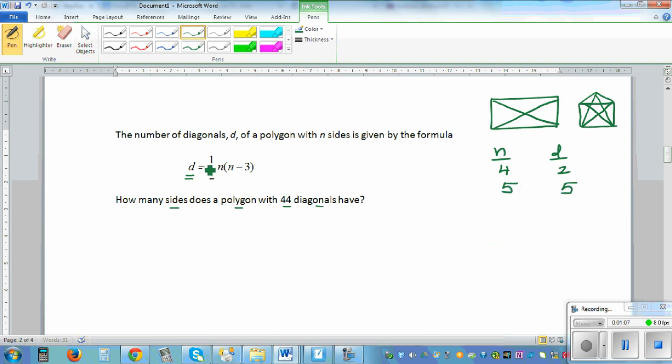So if d is 44, how many sides does this have? Let's put d as 44. So 44 equals one-half times n times n minus 3.